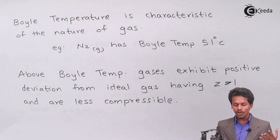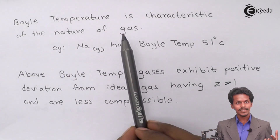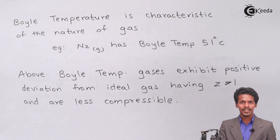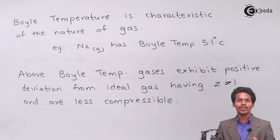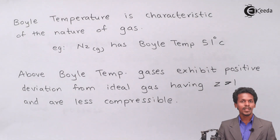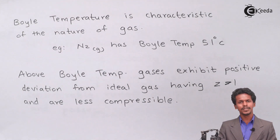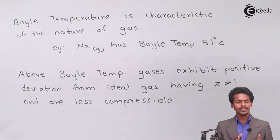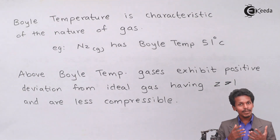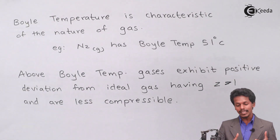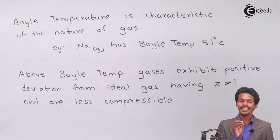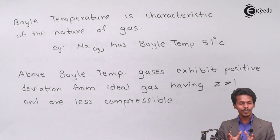Boyle temperature is a characteristic of the nature of a gas — it is specified for a particular gas. Just as boiling point is a specific value for a particular liquid — though yes, two liquids could have the same boiling point — similarly, the Boyle temperature also gives a particular characteristic of a particular gas.